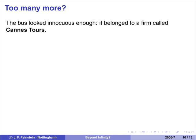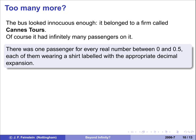A bus turned up from a firm called Cantors, and it had infinitely many passengers on it. But this time it had one passenger for every real number between 0 and 0.5. You can do between 0 and 1, though for the purposes of what I'm saying here, you should avoid the number 1. But between 0 and 0.5 will do.